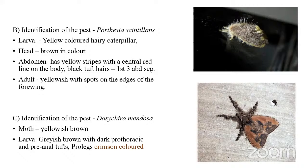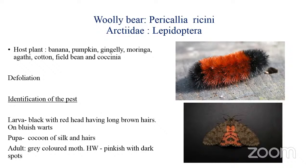The third hairy caterpillar is Dasychira mendosa. The moth is yellowish in color. A peculiar character of the larva is that the prolegs are crimson colored. The larvae are grayish brown with a dark prothoracic shield and also have a pre-anal tuft.